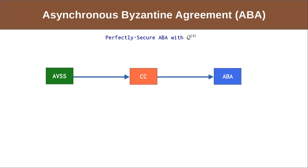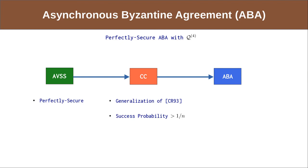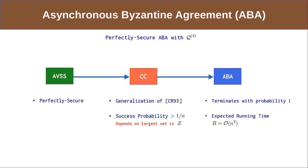Our asynchronous Byzantine agreement protocol is built using the standard framework of building asynchronous Byzantine agreement from a common coin protocol and an AVSS protocol. A common coin protocol allows the parties to output a common random bit. We use our perfectly secure AVSS protocol to build a common coin protocol that is a generalization of the threshold protocol of Canetti et al. While their protocol guarantees all honest parties output a common bit with constant probability, our generalized protocol only guarantees a success probability greater than 1/n, as it depends on the largest potentially corruptible set. Our ABA protocol is almost surely terminating, and the expected running time is of order n squared.